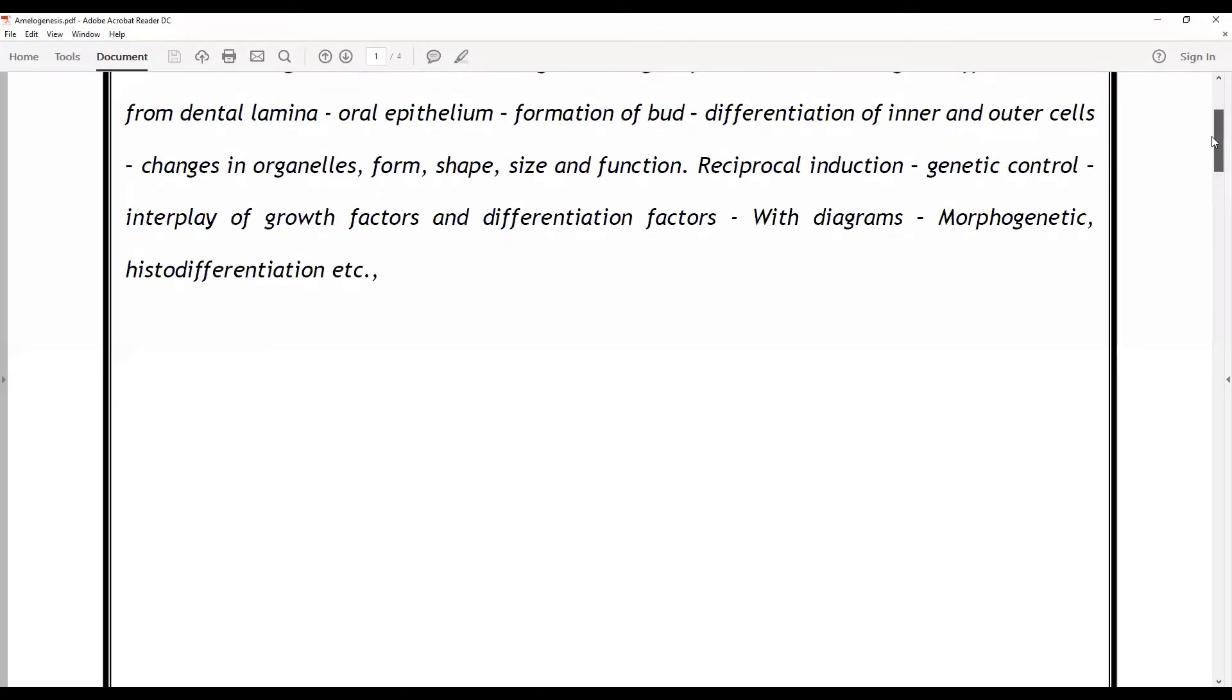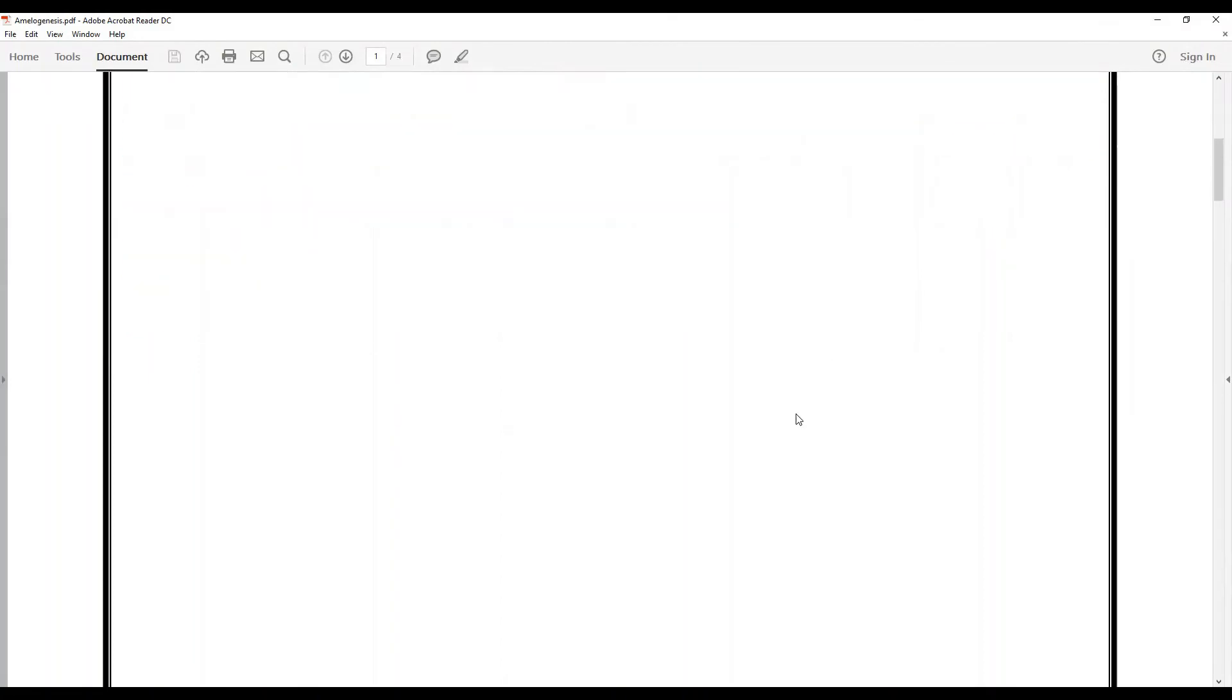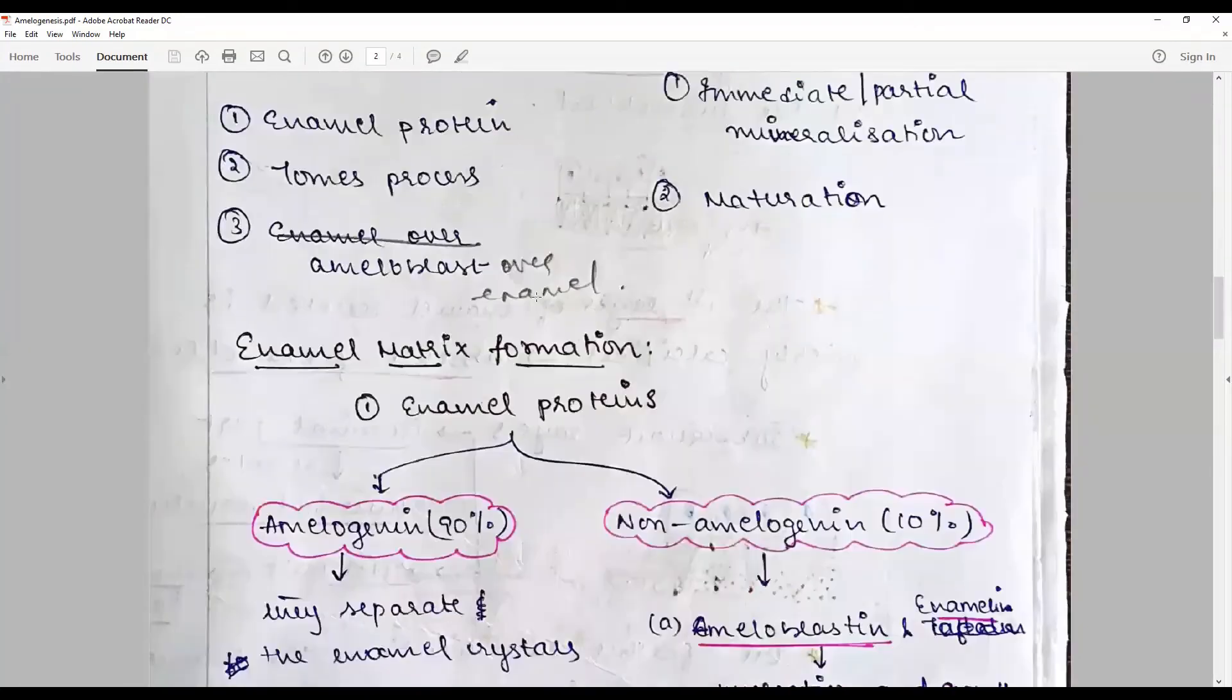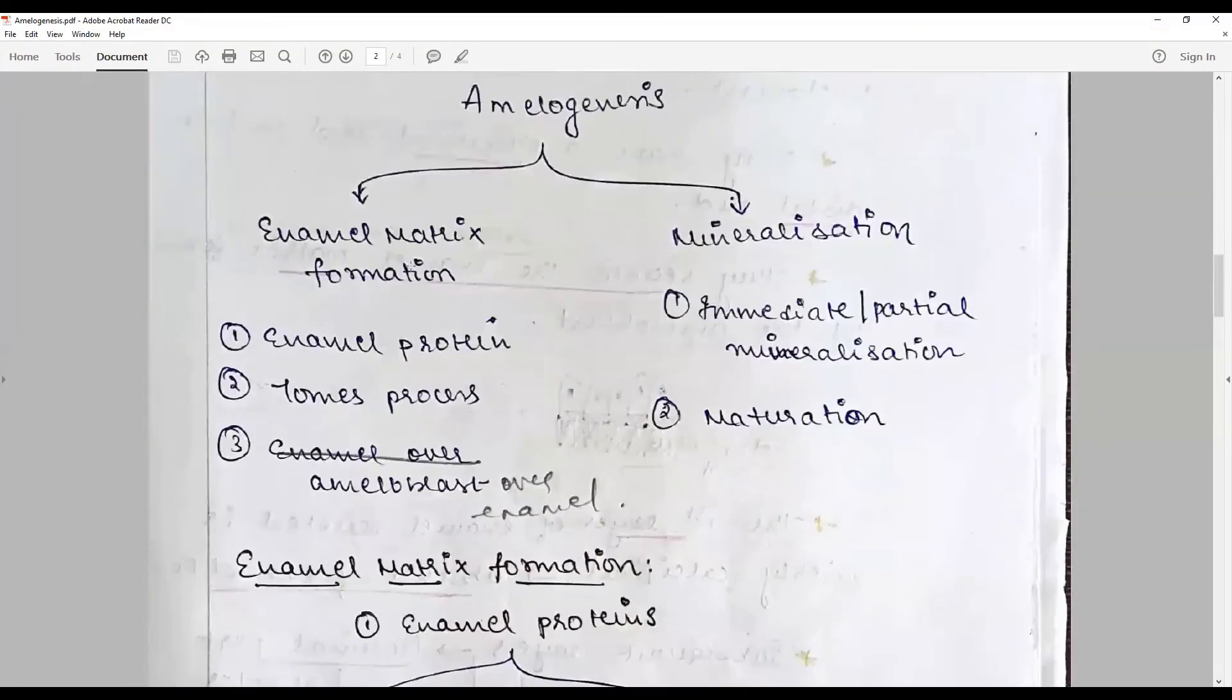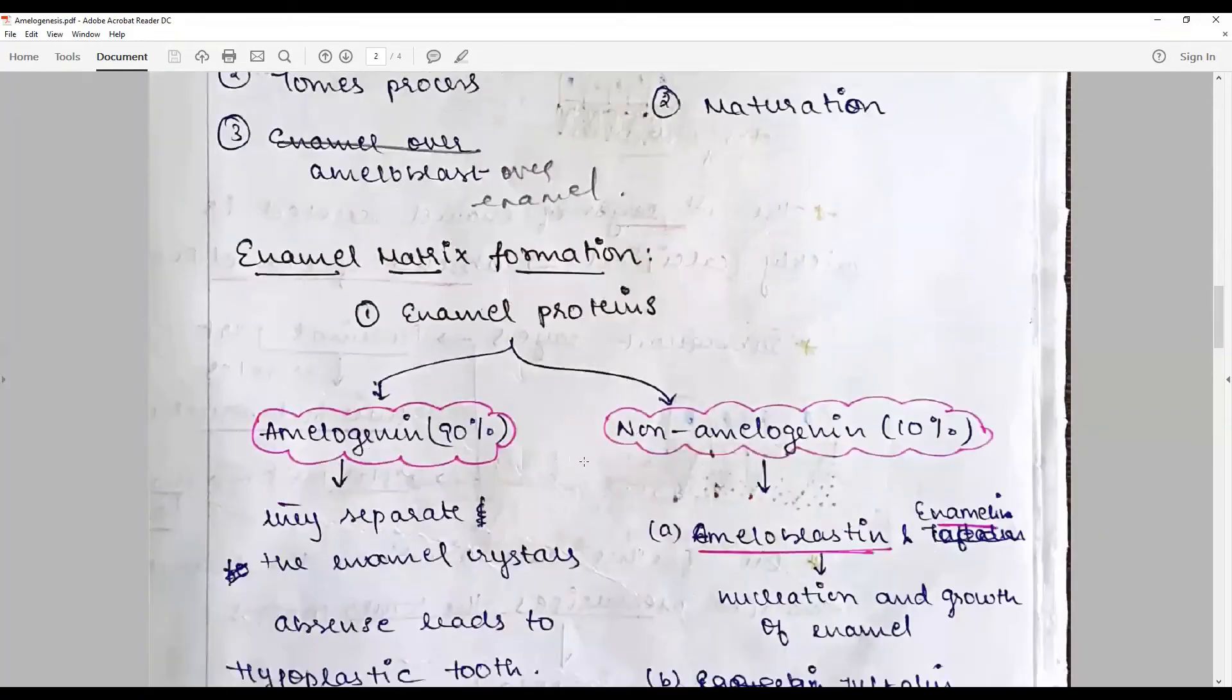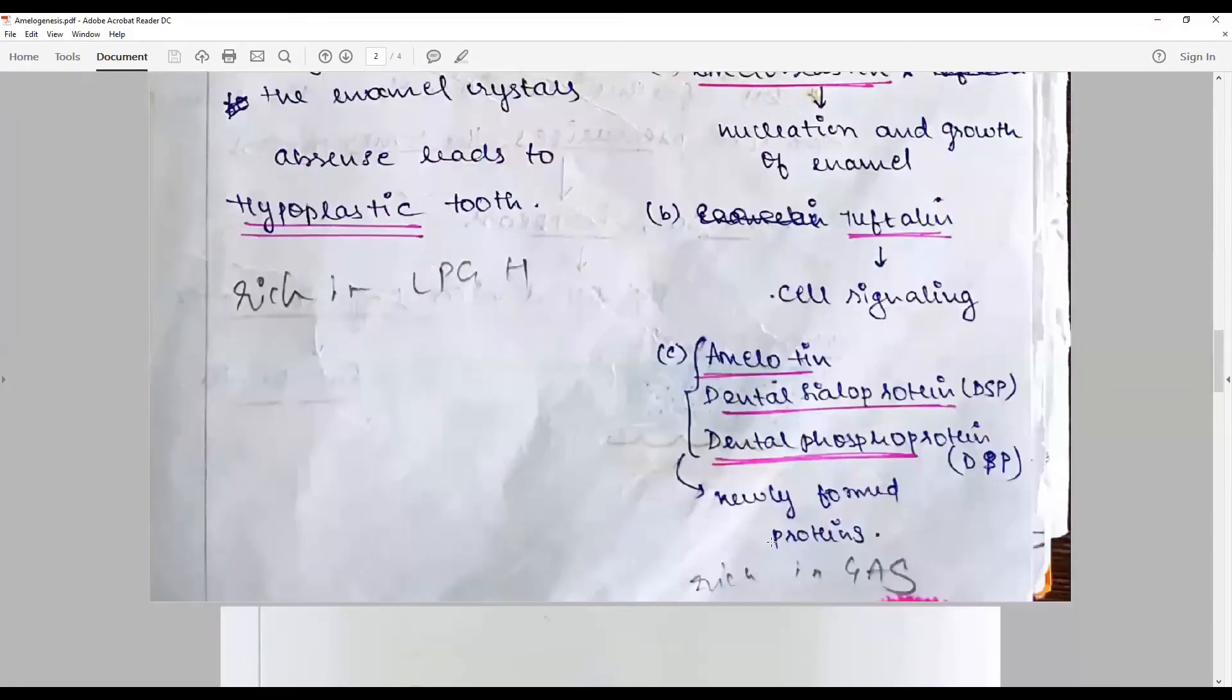Here we have discussed the enamel formation, all these things in different stages: the stages of ameloblast. In this essay we have talked only about the process of amelogenesis - the structures, the enamel matrix formation and mineralization. Enamel matrix formation is concerned with the life cycle of ameloblast. We talk only about the proteins. In total, you have to talk about enamel matrix formation, life cycle of ameloblast, and all these factors.